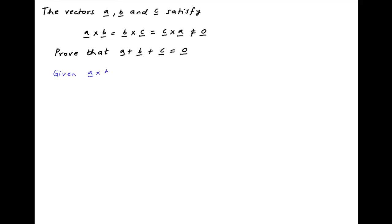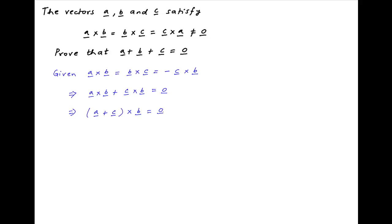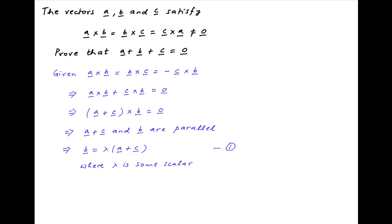We are given that vector a cross b is equal to vector b cross c, which is equal to minus of vector c cross b. This can be written as a cross b plus c cross b equals the null vector. The left hand side can be written as vector a plus vector c in brackets cross vector b equals the null vector. This implies that vector a plus c and vector b are parallel, which means that vector b can be expressed as a scalar multiple of vector a plus c. Let's assume that scalar is equal to lambda. Let's call this result 1.